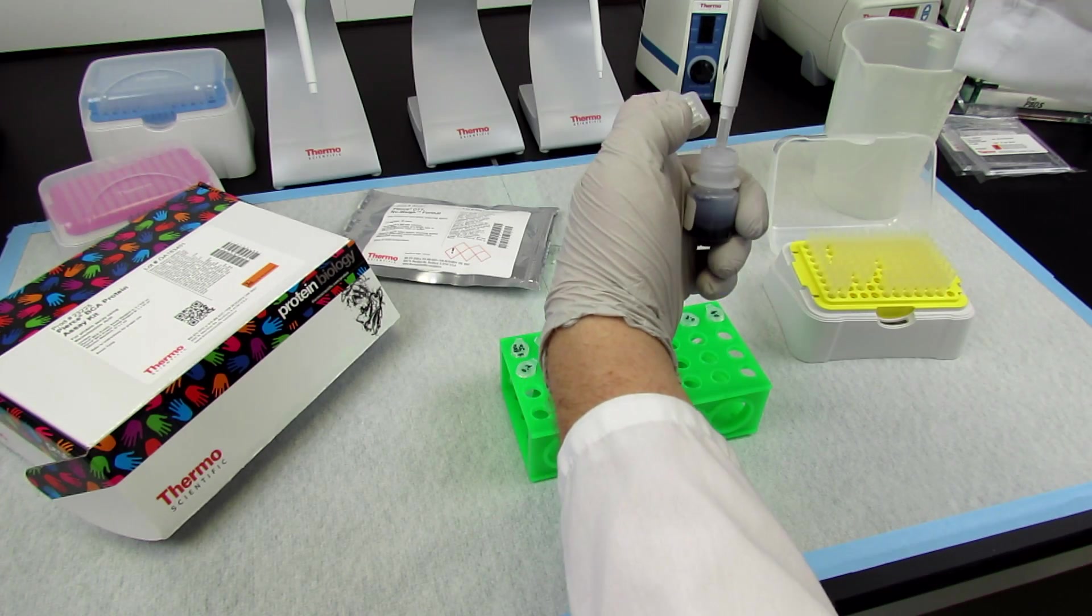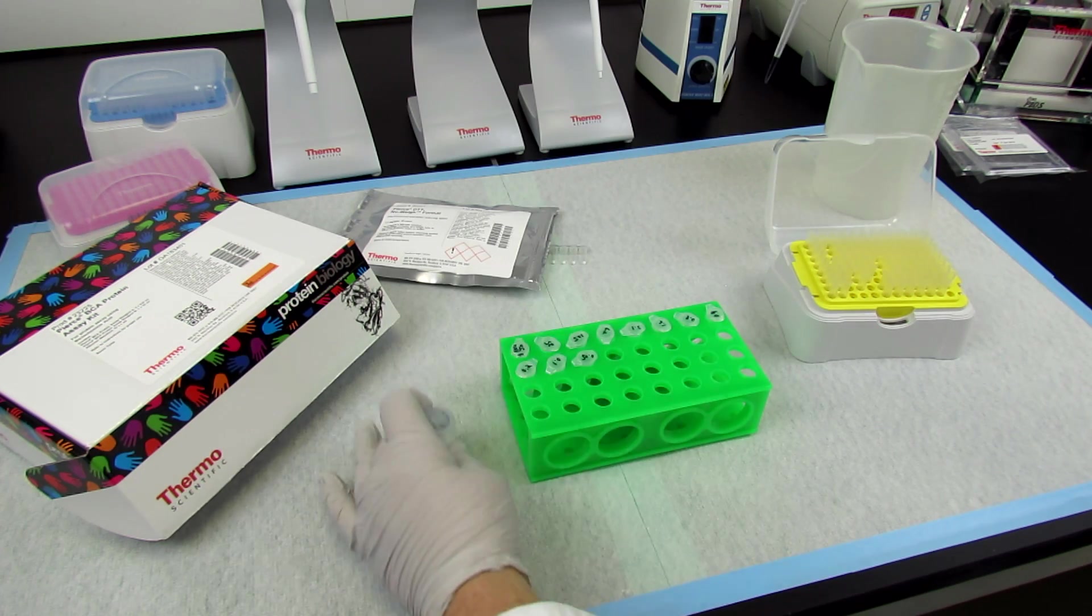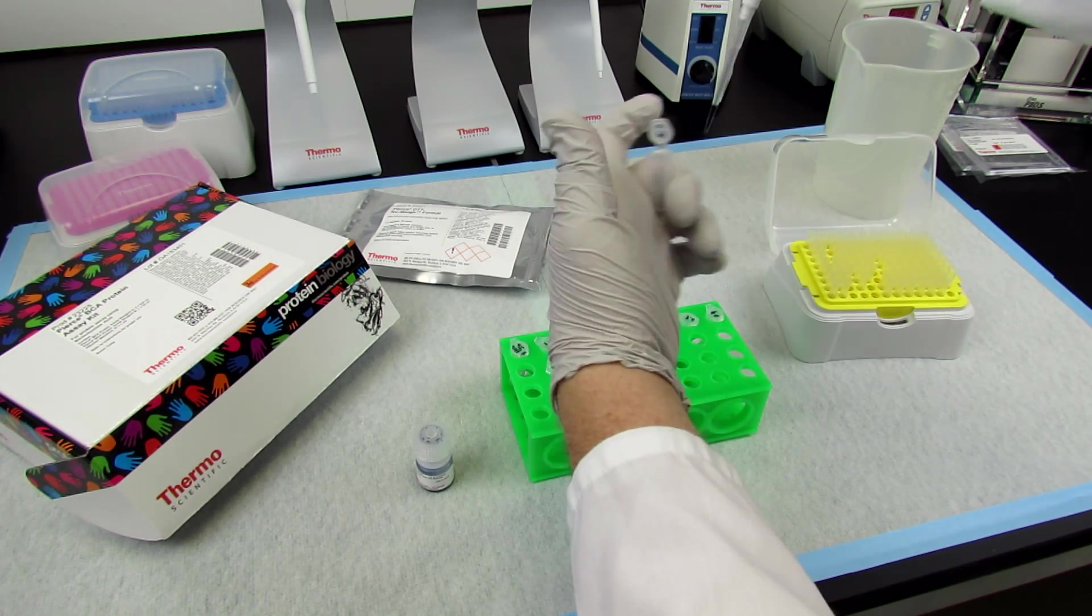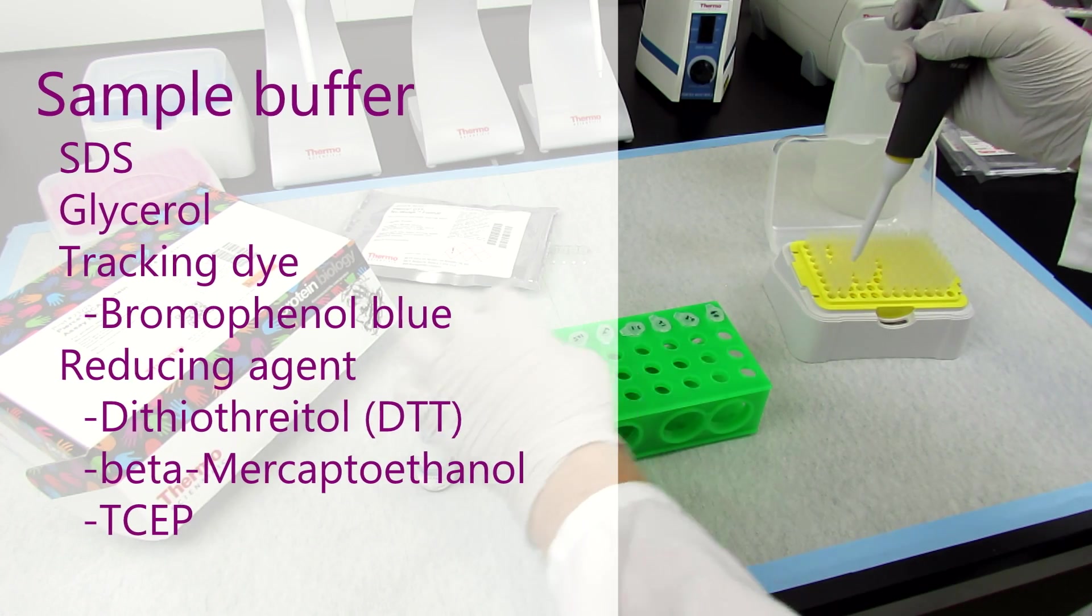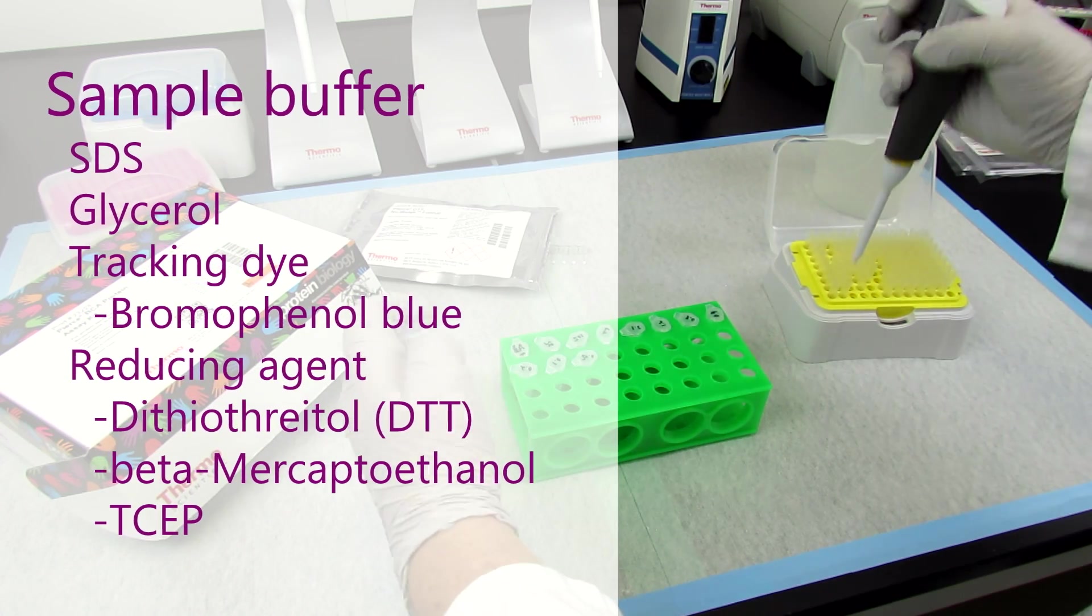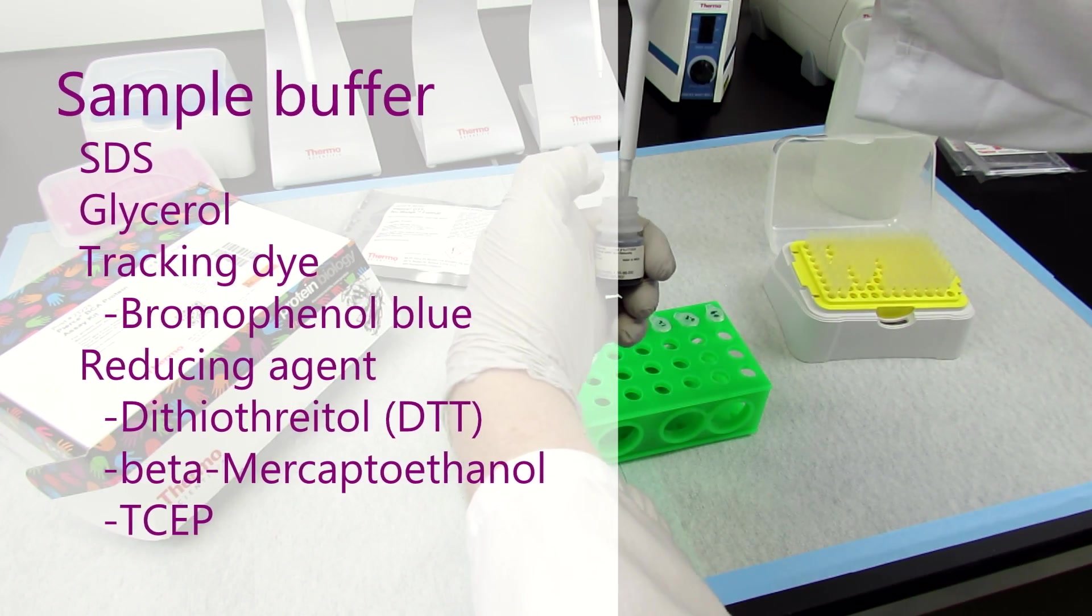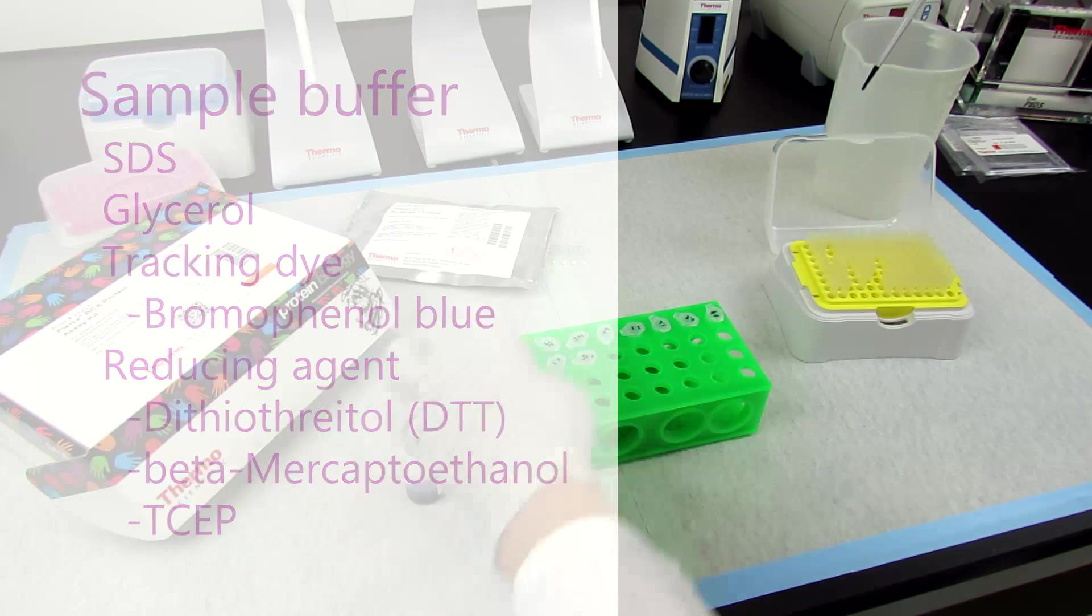After adjusting protein levels so that all lysates have a uniform protein concentration, combine the lysates with a sample buffer that includes SDS, glycerol, a tracking dye such as bromophenol blue, and a reducing agent such as dithiothreitol, beta-mercaptoethanol, or TCEP.